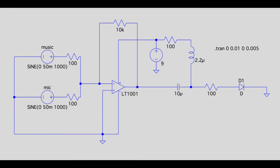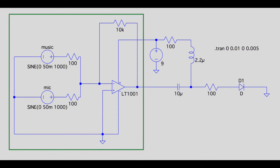Here we have an LTSpice diagram of the transmitting end of the circuit. The music and microphone signals are represented as AC sine wave inputs. The highlighted portion of the circuit represents the mixer — an op-amp is used to combine the AC signals via a negative feedback loop.